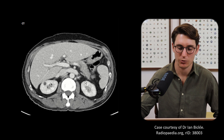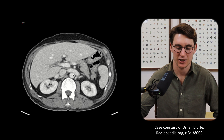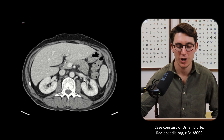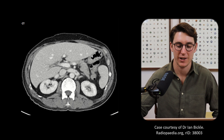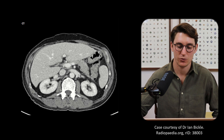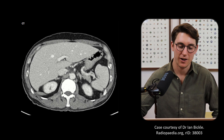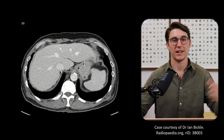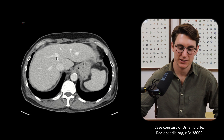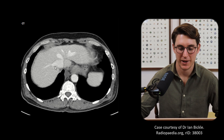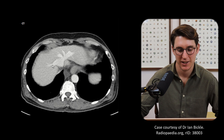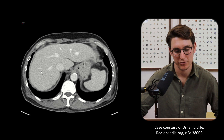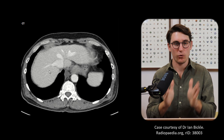One good way of confirming the IVC is we can see our renal veins coming into it. Our left renal vein runs anterior to the aorta and posterior to the SMA — we can see our left renal vein and right renal vein coming into the IVC. As we scroll upwards, we'll see the left, middle, and right hepatic veins coming into the IVC. We're going to use those hepatic veins to draw lines out to the periphery — from the left hepatic vein, middle hepatic vein, and right hepatic vein — to separate the liver into our four different sections.